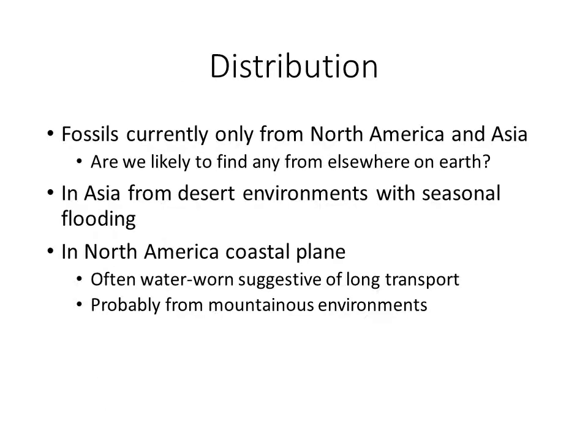The distribution we know today based on current finds is that these are either found in North America or in Asia, with the older groups primarily found in Asia. Probably it's unlikely we'd find them elsewhere, because this group evolved in Laurasia as opposed to Gondwana. But the absence of evidence is not evidence of absence — just because we find them in two places doesn't mean we understand their phylogeny perfectly. For the moment, these are Laurasian groups.